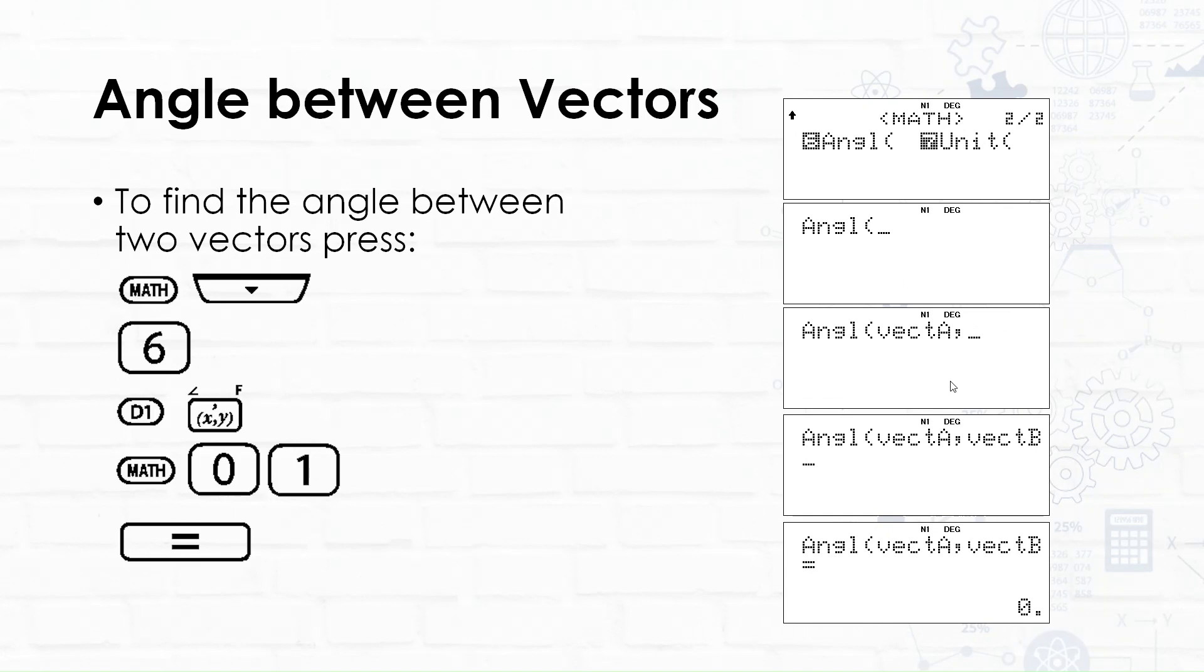Angle between vectors. To find the angle between any two vectors, we press math, and there's a further menu if you press the down arrow. You'll see 6 is angles and 7 is units, so we're going to choose 6 for angle. We're going to put in our two vectors, and because they are scalar multiples, our angle between the two of them is actually zero. On the calculator now, I'll do it as a different example. We'll change vector B for you.